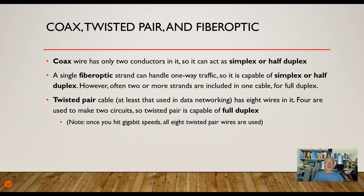Let's put these together. With coax cable, you only have two conductors, so it can be simplex or half duplex. It's half duplex only if the equipment on either side is capable of cutting off and restarting transmissions in both directions — that's a function of the equipment on both ends, not the wire itself.